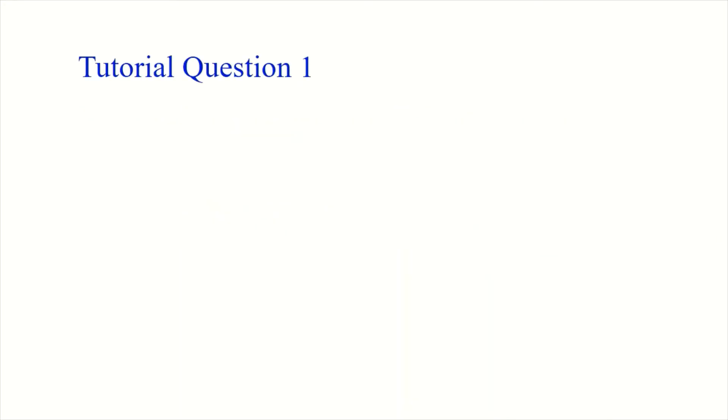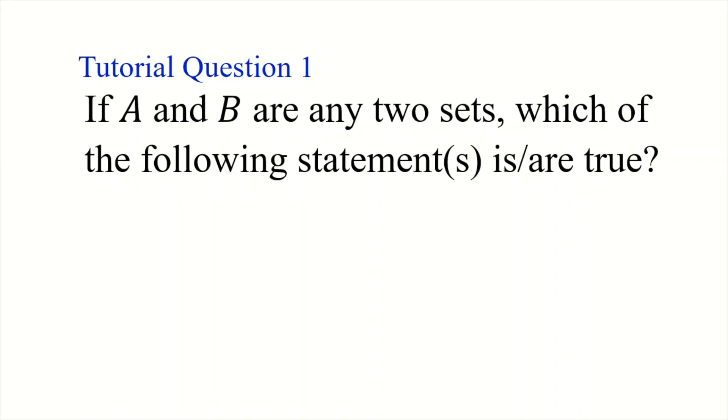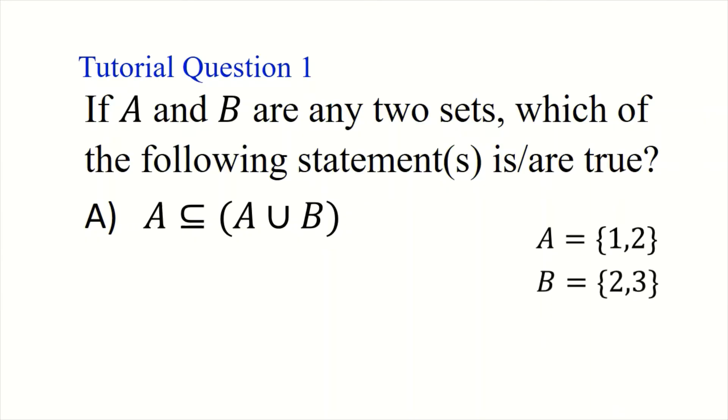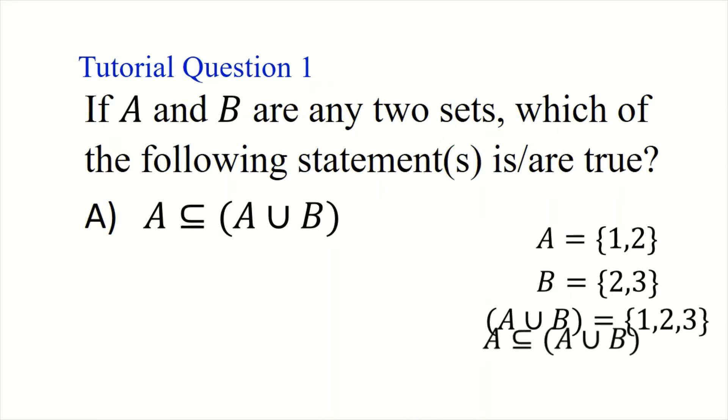Tutorial question one: if A and B are any two sets, which of the following statements is or are true? Let's look at the first option — A is a subset of A union B. A union B means every element in A or in B, so everything inside set A is already included in A union B. Therefore, A is a subset of A union B.